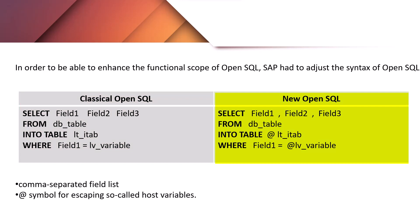And to the right side we have the new OpenSQL select query. The first thing to note is the comma-separated field list after the keyword SELECT. In classical OpenSQL syntax, fields are separated by space, whereas in new OpenSQL syntax, fields are separated by commas.